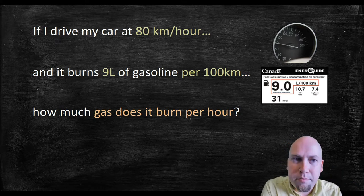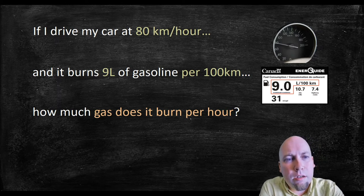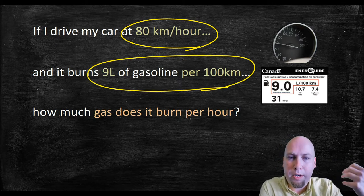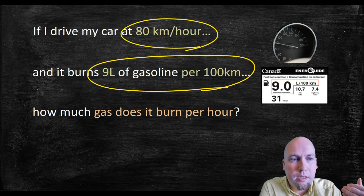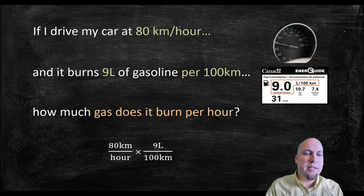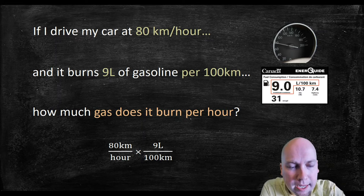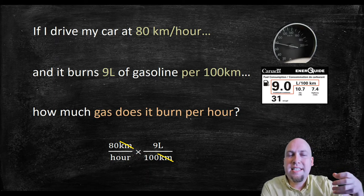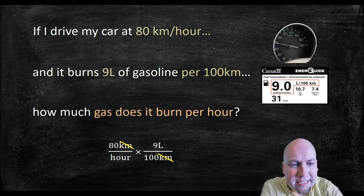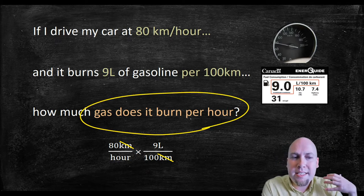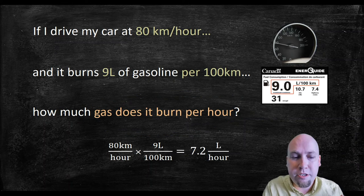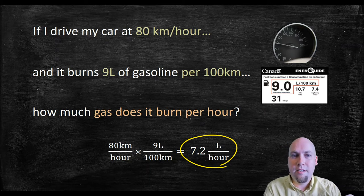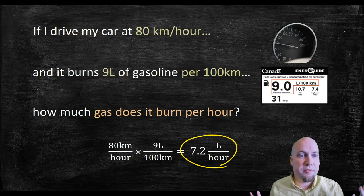This is the type of problem you've done before. All that you do is multiply these two rates of change together. You've got kilometers per hour and you've got liters per kilometer. If you just multiply them together, the units cancel — kilometers on the bottom cancels with kilometers on the top — and all you're left with is a rate in liters per hour. That's exactly what we want, and we find that you're going to burn roughly 7.2 liters of gasoline per hour at that speed.